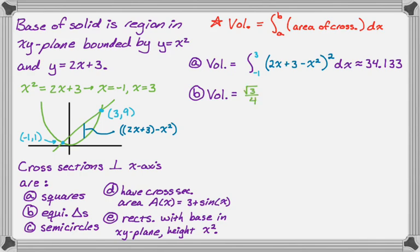And side is the thing we already calculated, so we're just going to go with root 3 over 4. So I like to pull that out and put it in front of the integral. And then it's basically the same integral, so we're going to go from negative 1 to 3, and then the side is still 2x plus 3 minus x squared, and we want to square the side. And this is approximately 14.780.